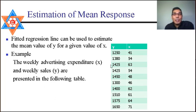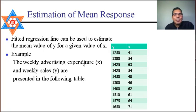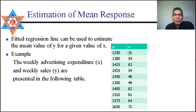Consider the example of weekly advertisement expenditure (x) and weekly sales (y). The first data point shows sales of 1250 with advertisement expenditure of 41. All data are given, and from this we can find the required summation values to compute b₁.